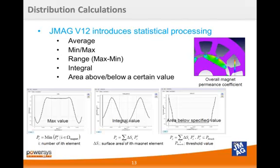The final tool to help visualize distribution quantities is the statistical processing tool. If we are looking at a parameter such as the permeance coefficient of a component, this tool can tell us the average value, minimum and maximum values, range, integral, and area above or below a certain value for the complete component.